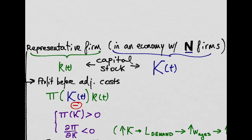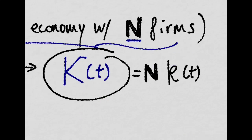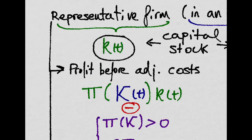Imagine we have an economy with n identical firms, and we want to know the profit function of a representative firm whose capital stock is denoted by small k, as opposed to the capital stock existing in the whole economy, which is big K, that is the aggregate capital stock of the n firms.